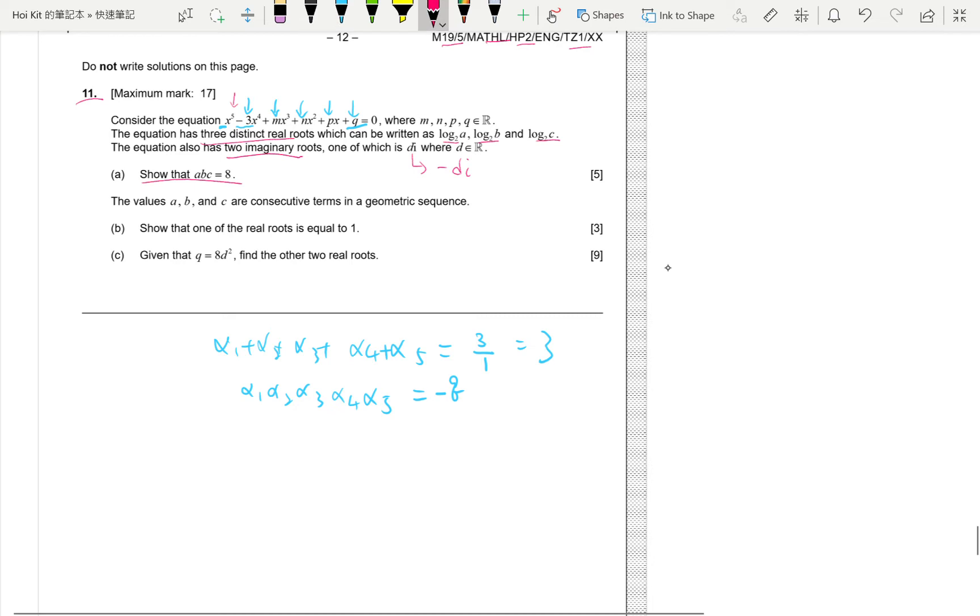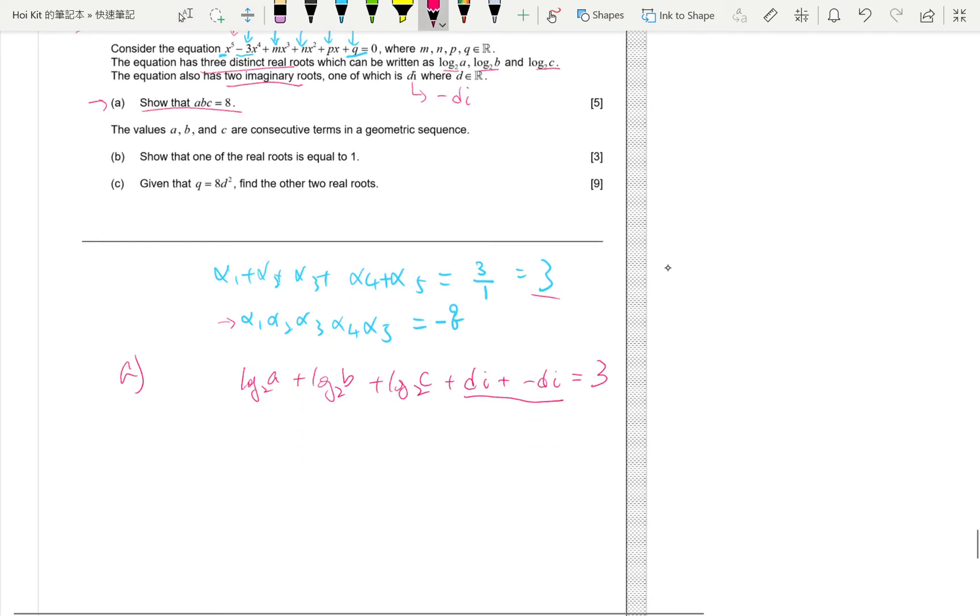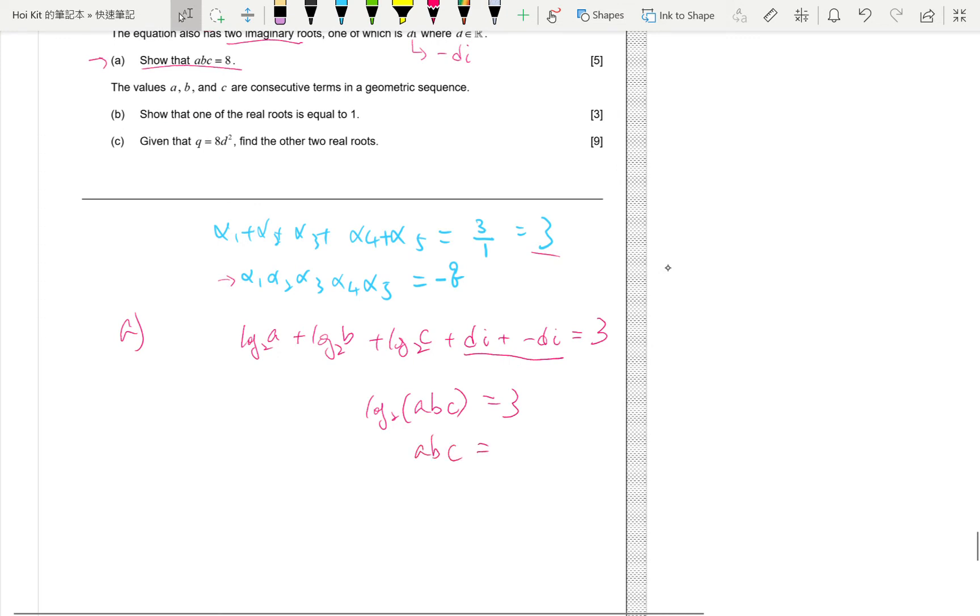So, we're ready to do part a. I want to show that a times b times c is 8. Then, you could be tempted to do the product root, due to the fact that they're multiplying together. But, you could try that and it wouldn't work. So, as a matter of fact, you do the sum of root. So, the root of log a log b log c plus di plus minus di, it should be 3. Obviously, di plus minus di, they cancel out. And the fact that we do sum of root is because if you have log adding up, due to the property, it becomes log multiplied. This is why we do the sum of root. So, abc is obviously 8, 2 to the power of 3 is 8. Nice.